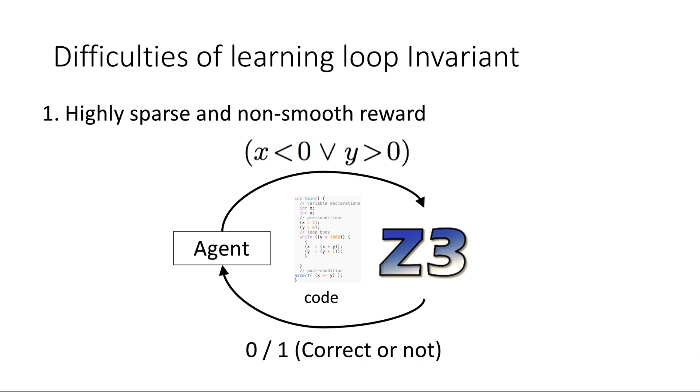So one can see the positive reward is only received when you actually solve the problem. This is quite difficult for reinforcement learning algorithms because of the sparsity and non-smoothness of the reward.